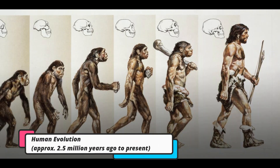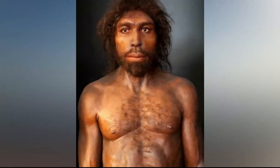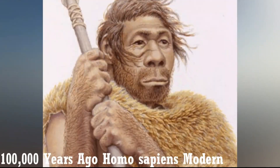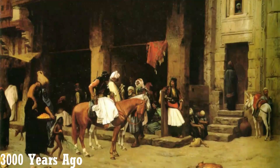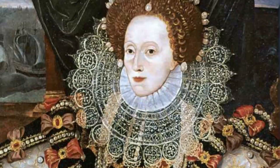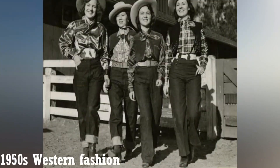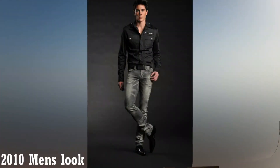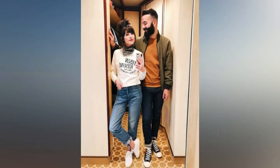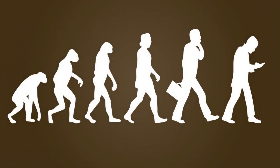Human evolution, approximately 2.5 million years ago to present. The emergence of the Homo genus in Africa marked a profound juncture in Earth's history. Homo sapiens, the species to which we belong, embarked on a remarkable odyssey. From humble beginnings, humans spread across the globe, evolving culturally, socially, and biologically. The story of humanity is intricately woven into the fabric of Earth's evolution.